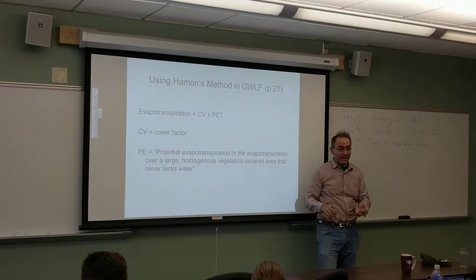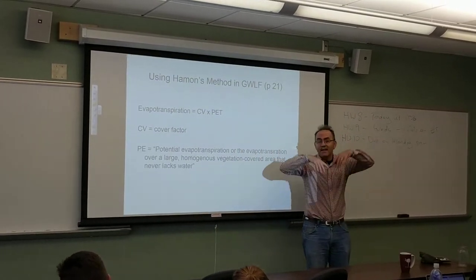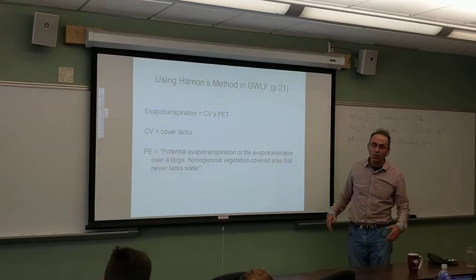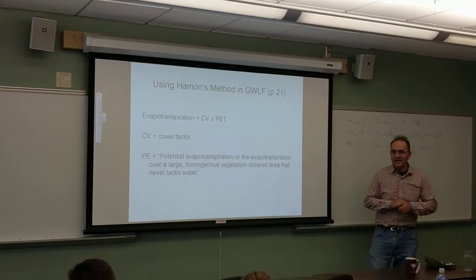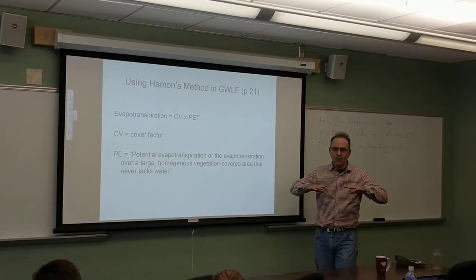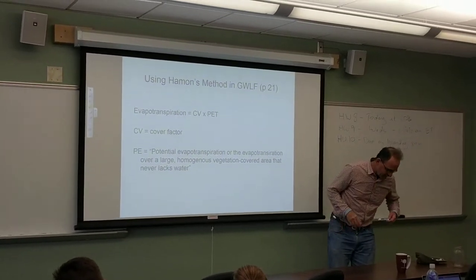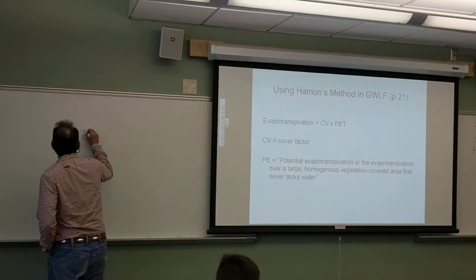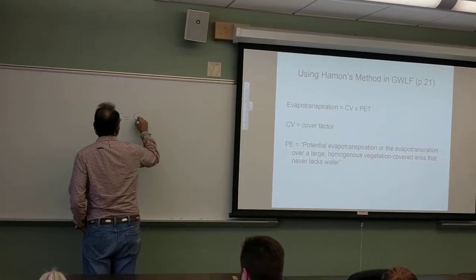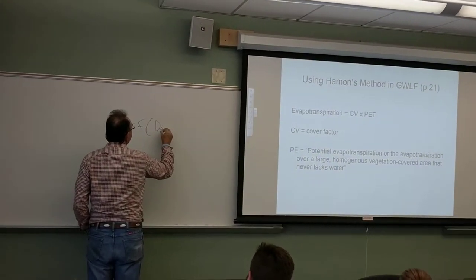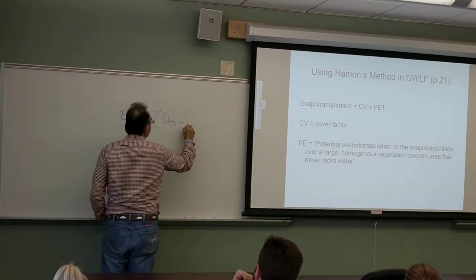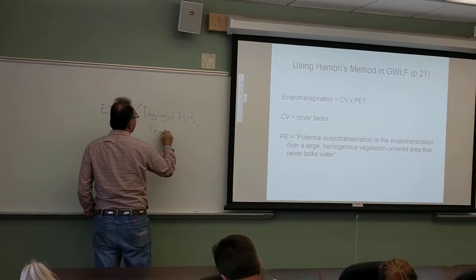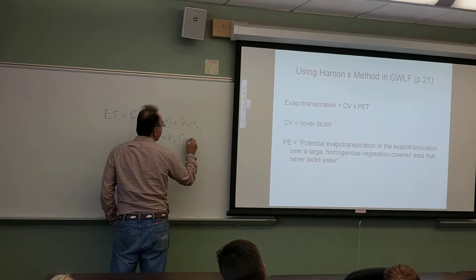In the summer, when it's hot and you've got lots and lots of green things evaporating. Then in the winter, as plants shut down, evapotranspiration almost goes down to a minimum. So evapotranspiration really is a function of daylight hours, temperature, and cover.